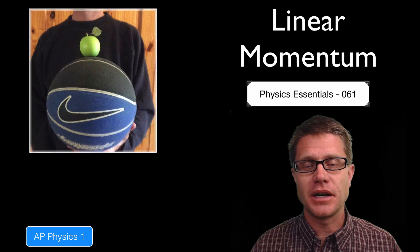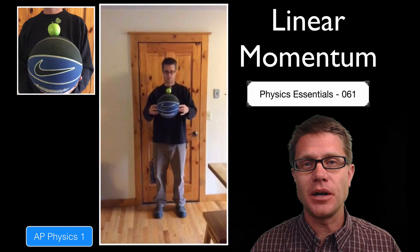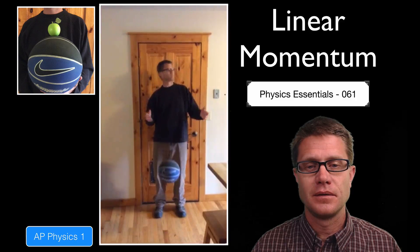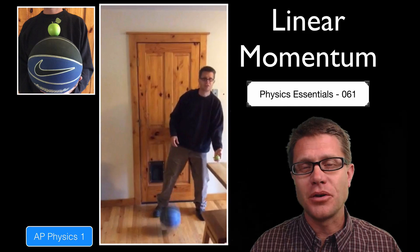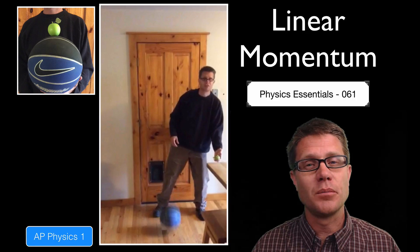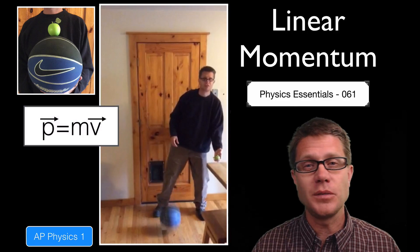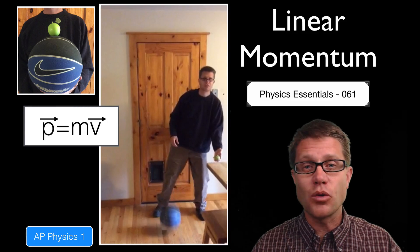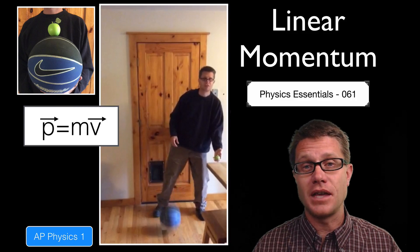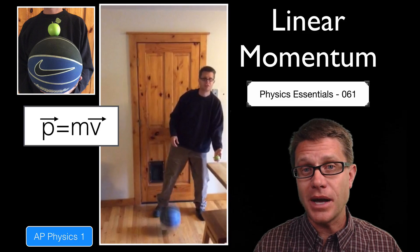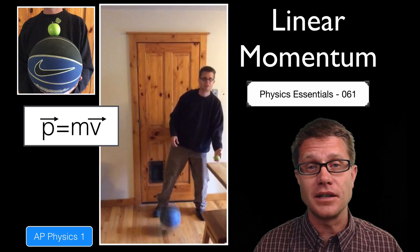I am going to start with a demonstration. I am going to drop a basketball and an apple at the same time. You can see the apple is going really fast. Where did that speed, that velocity, come from? Well it is the momentum of the basketball. Momentum is equal to mass times velocity. Since the basketball is much more massive than the apple it is transferring some of that momentum, and since the apple has a small mass it gains a larger velocity.